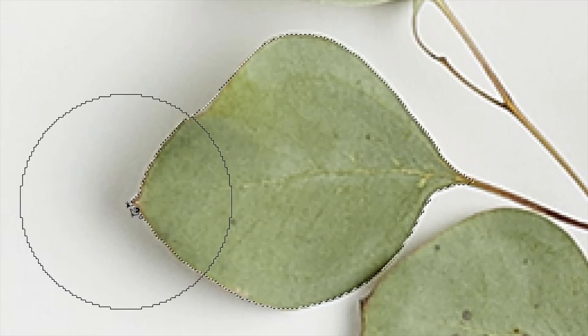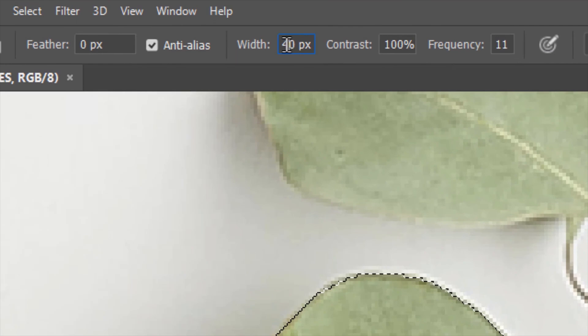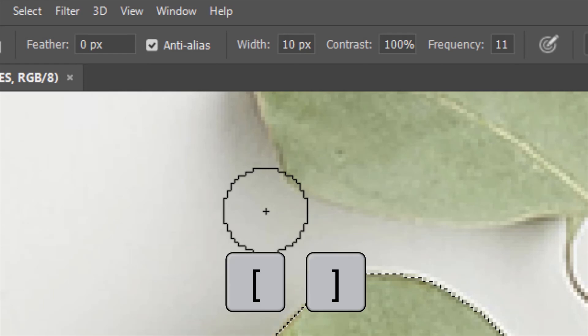You can change the size of the circle by going to width and then changing the value there. Or you can use the square brackets to increase or decrease the size of the circle or change the width. A smaller circle will of course get a smaller area from which the tool can detect the edge of an object. So it will take a little bit of caution and time for you to select the object properly.